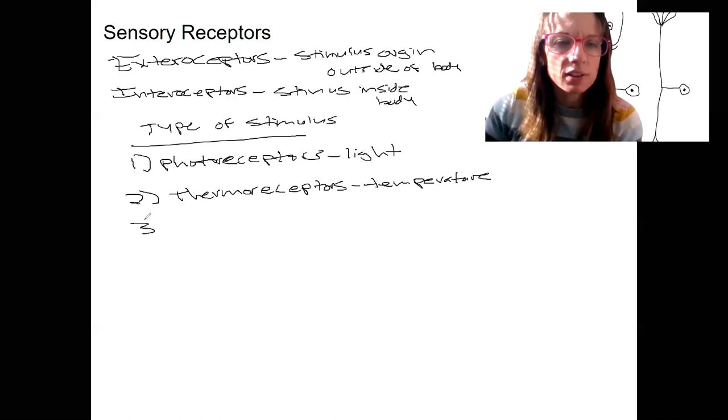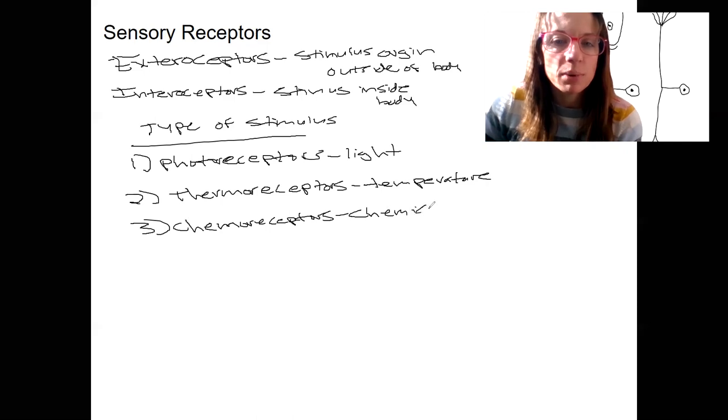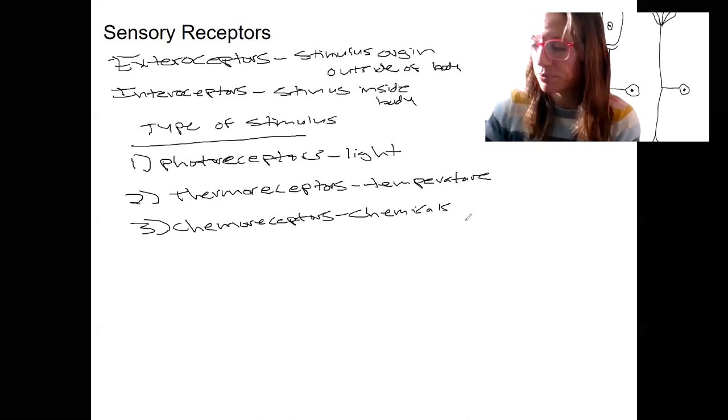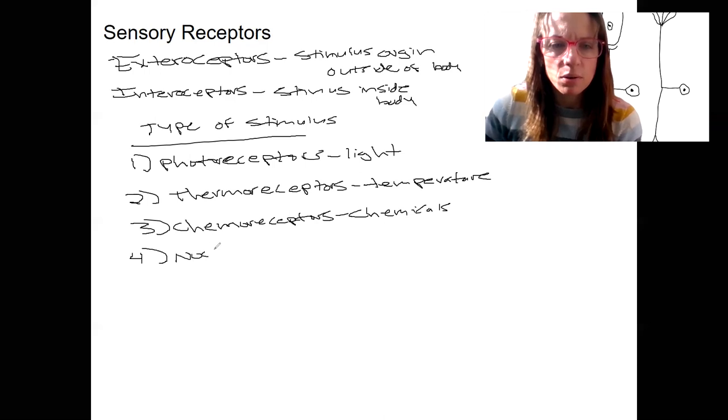We've got chemoreceptors. These detect chemicals. So this would be somewhat similar to a ligand-gated channel. But these typically are things, well, the two examples for special senses are taste and smell are actually chemicals binding to a receptor to transduce those signals. We've got nociceptors. These detect pain.